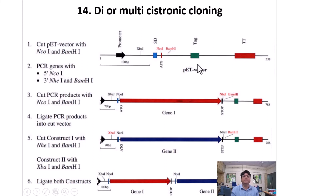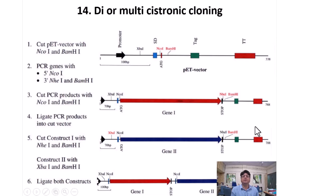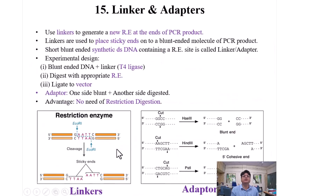Di- and multicistronic cloning: an example using a PTA vector. Digest your PCR product by adding a restriction site at the 5' end of a primer, for example NcoI and BamHI. When you design the BamHI site, also add one additional NheI site. The next subsequent PCR product must have NheI on one side and BamHI on the other side. This way you can subsequently clone more than one PCR product one after another.